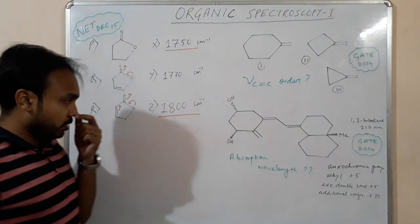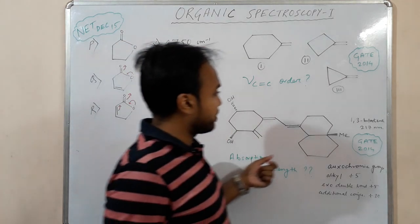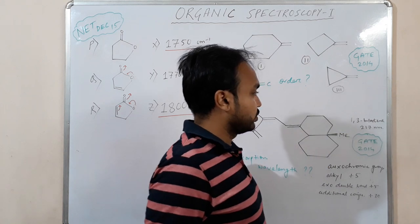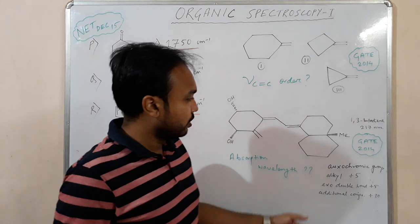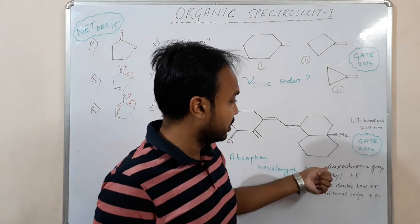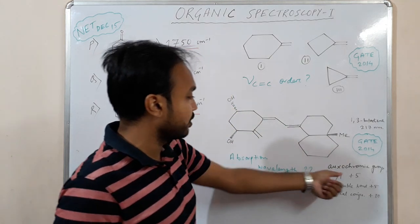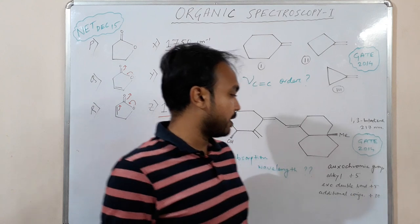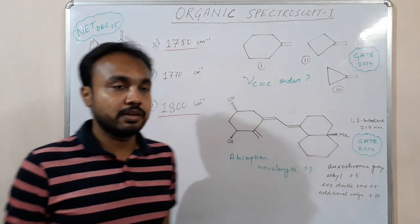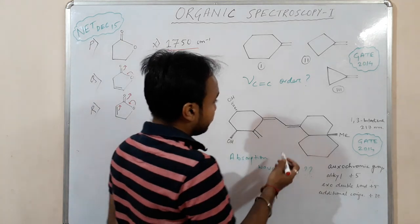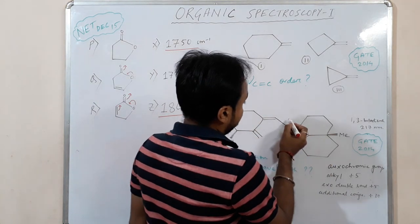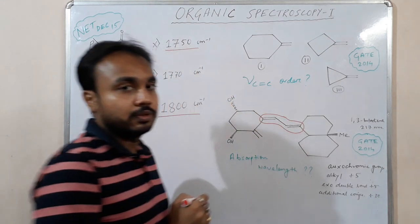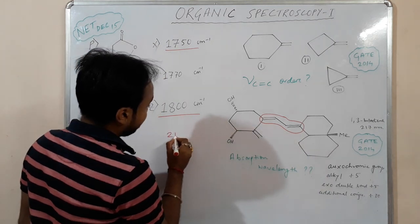Moving on to the third problem, which is based on the Woodward-Fisher rule. We are given the base value for a 1,3-diene (beta) system as 217 nm. The auxochromic and oxochromic group increments are: alkyl substituent +5, exo C=C double bond +5, and additional conjugation +30. So our 1,3-diene system has a base value of 217 nm.